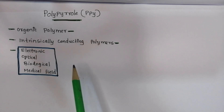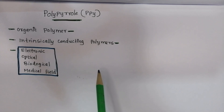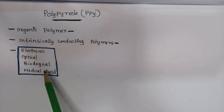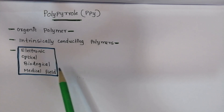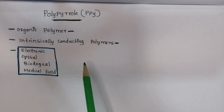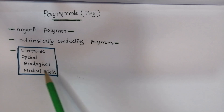Basically, polypyrrole is used to make films. These are used in electronic applications, optical, biological, medical, and more. We are using polypyrrole for these purposes.